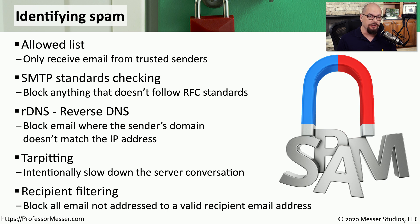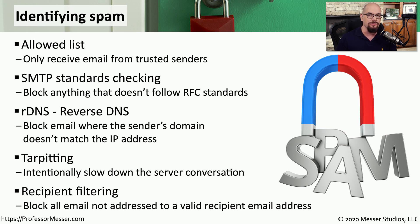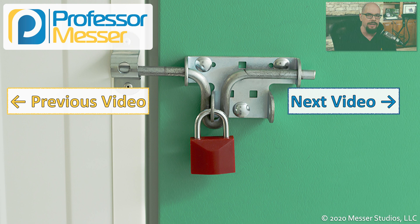And lastly, there is recipient filtering. Very often, spammers will send messages to any particular name they can find, even if that name doesn't actually exist in your organization. Many organizations have a catch-all where all of those messages are kept, but another strategy is to automatically reject those messages instead of accepting them — that way, spammers will not be able to send any messages inbound unless they have a correct email address as the recipient. There's never any single strategy for stopping spam; you have to use many different techniques and strategies to make sure you can stop this before it arrives in your users' inboxes.